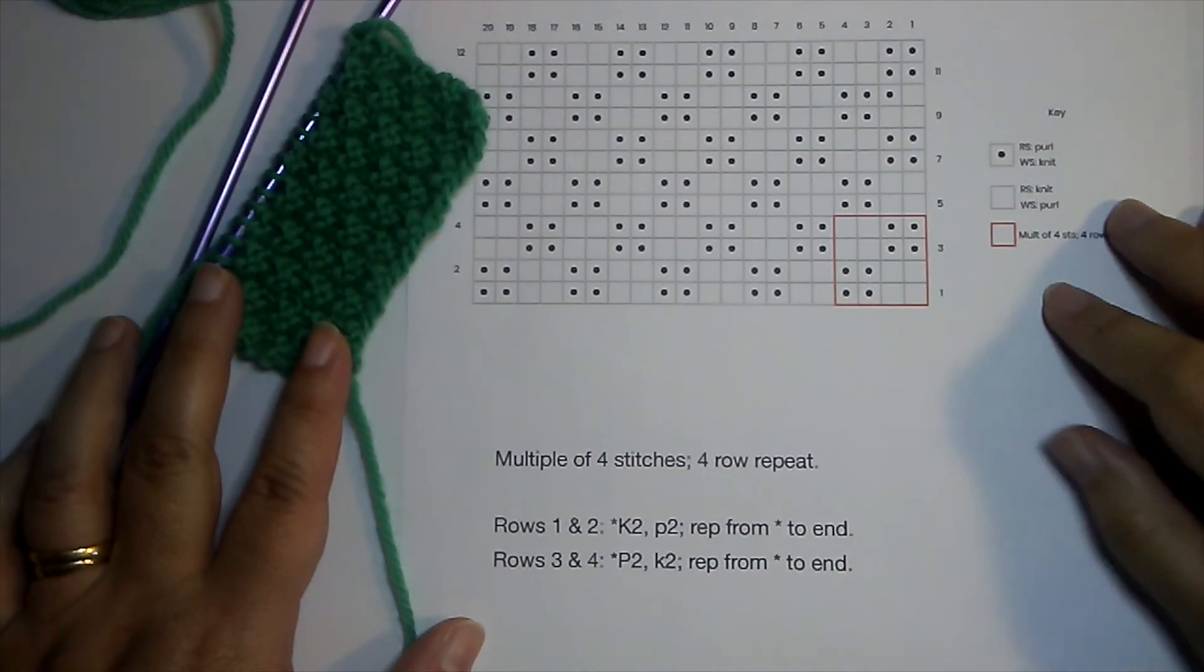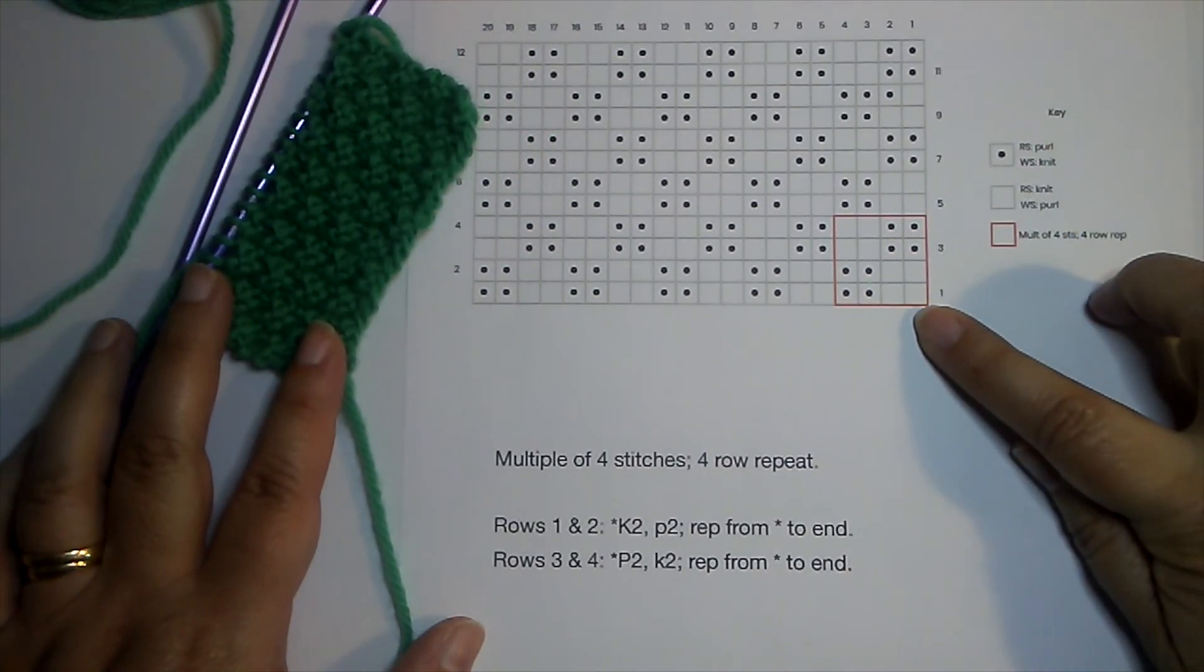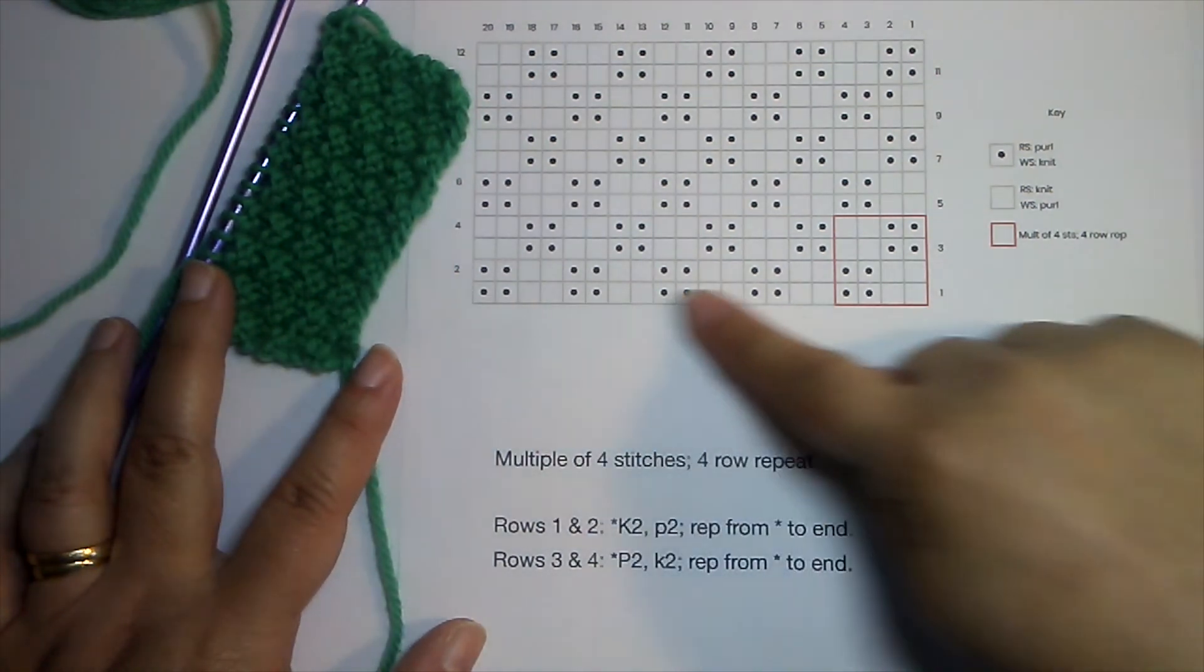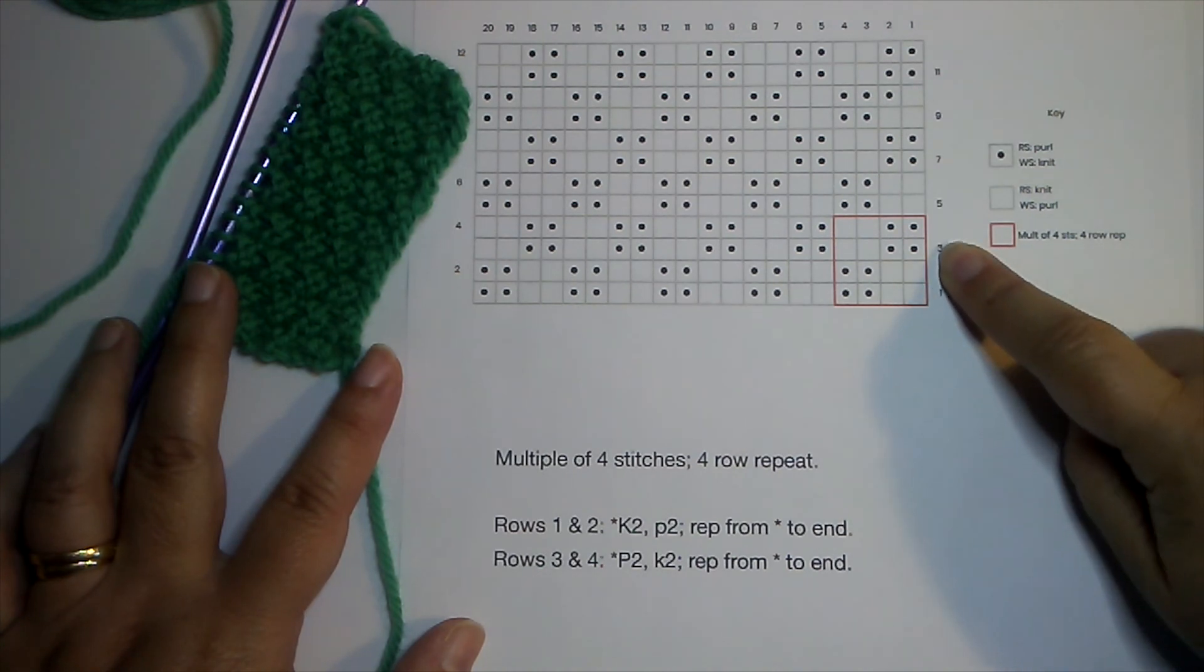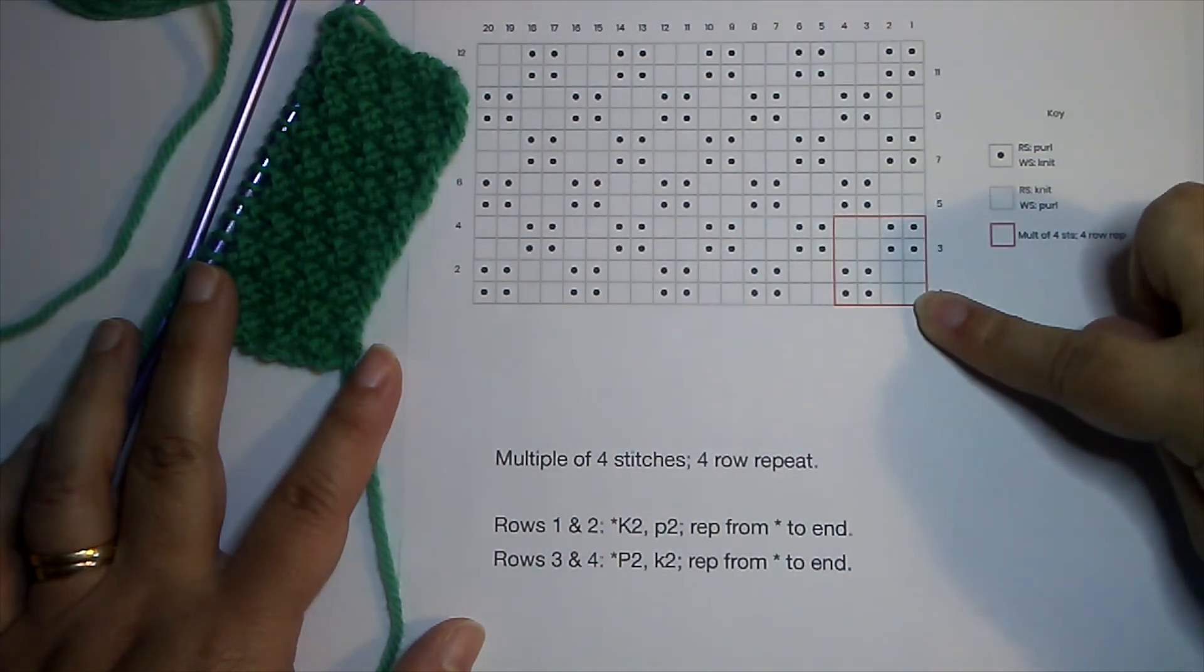On the first row you knit two, purl two. And then on the second row you follow the same pattern, or you would basically work the stitches as they present to continue that pattern. And then on row three we break that, what would end up being a rib if we continued.